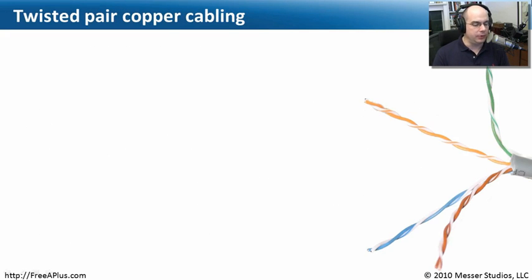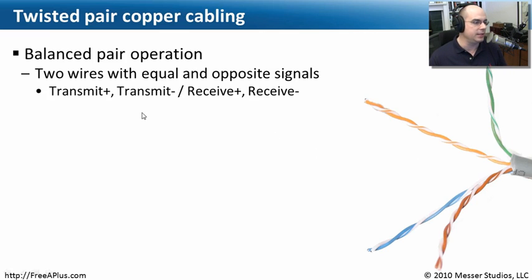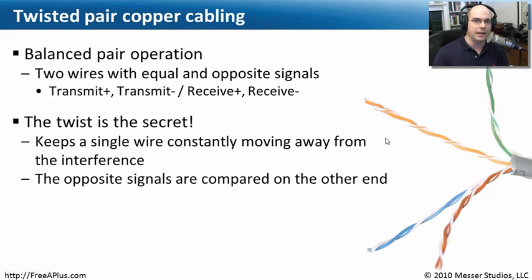Some of the most common cabling you'll find for networking and voice communication is twisted pair copper cabling. It gets that name because, as you can see, the pairs are twisted around each other. Each one of those pairs is balanced — it has a plus and a minus associated with the signals. As it spins around, it might have a transmit plus and a transmit minus, or a receive plus and receive minus. In reality, it's the signal going through it that is at a different wave, with sine waves where as one goes up, the other one is going down. That helps minimize interference to the signals going through.